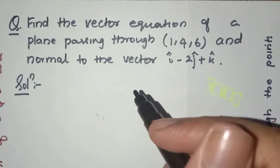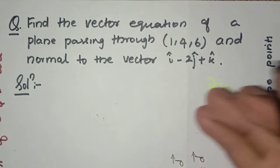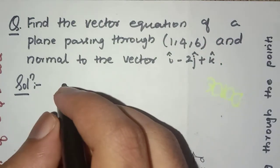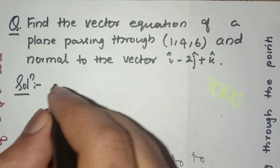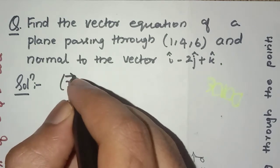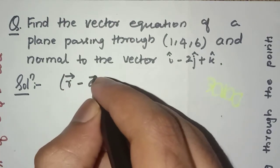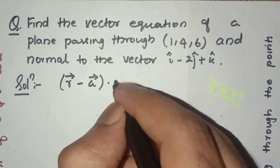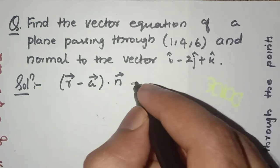Okay. So for finding the vector equation of this, the equation which we need to understand is (r minus a vector) dot n vector is equal to 0.